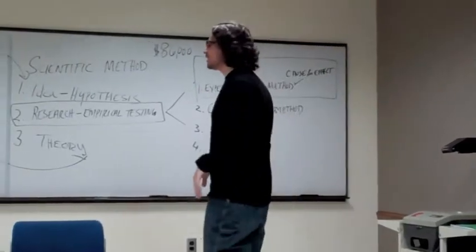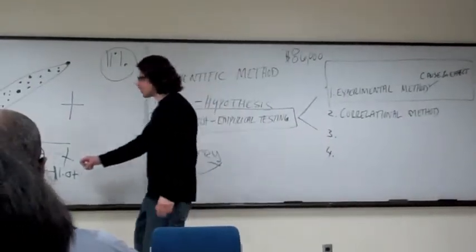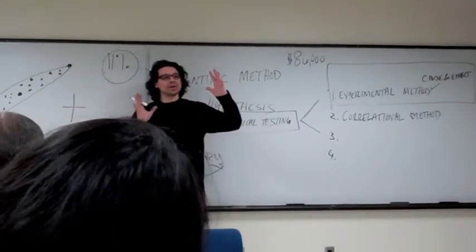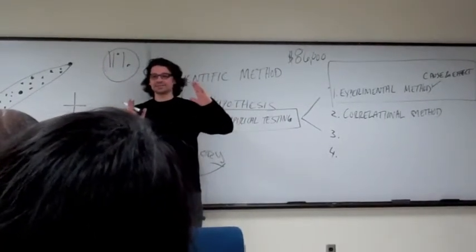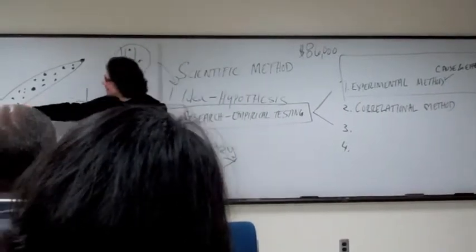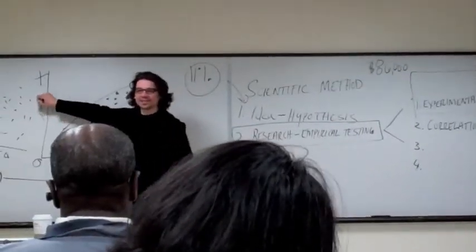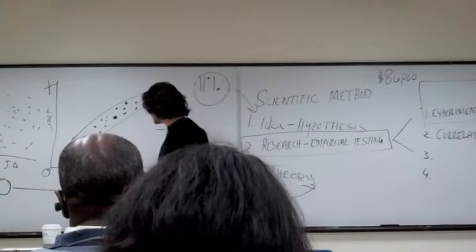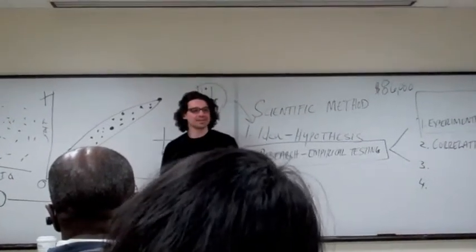If there was a research study that had a correlation of positive 1.0, you know that everybody in that study, when caffeine went up, or when—what did we say here—when SAT went up, GPA went up. Everybody in the study, perfect 1.0. Make sense?